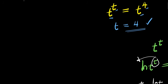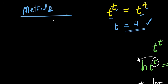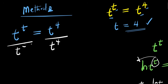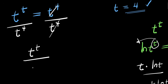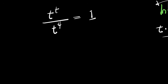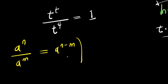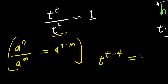Now let's use another method to see if we get the same two solutions or find additional ones. In Method 2, starting from t to the power of t equals t to the power of 4, we divide both sides by t to the power of 4. Using the identity that a to the power of n divided by a to the power of n equals a to the power of n minus n, we subtract exponents to get t to the power of (t minus 4) equals 1.